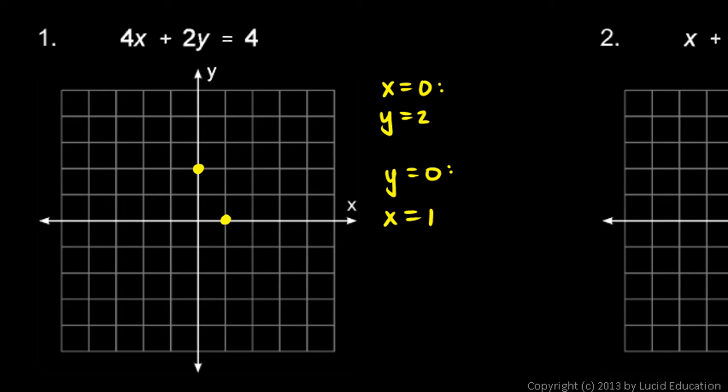So that's one point. And then we'll let y equals zero. If y equals zero, we're left with 4x equals 4, so x is 1. So that's another point, and that's enough. You can then sketch in the line.